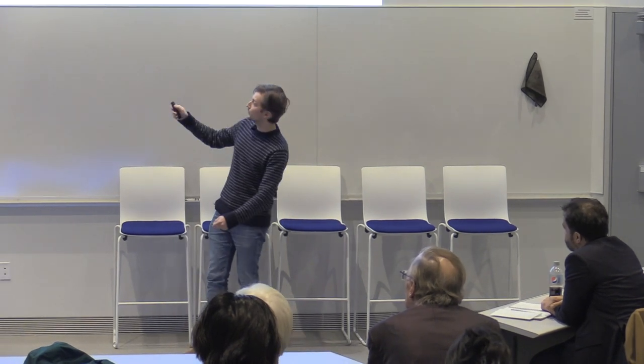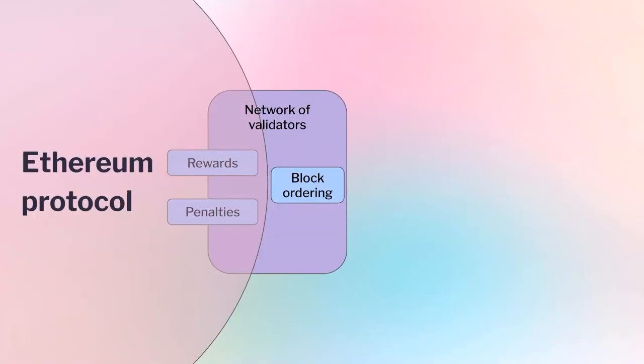In Flashbots, the auction is for the very top of the block, and the rest is filled in with regular transactions. The Ethereum protocol controls validators to some extent, but block ordering is something the protocol doesn't concern itself with — it's entirely outside the protocol's purview.